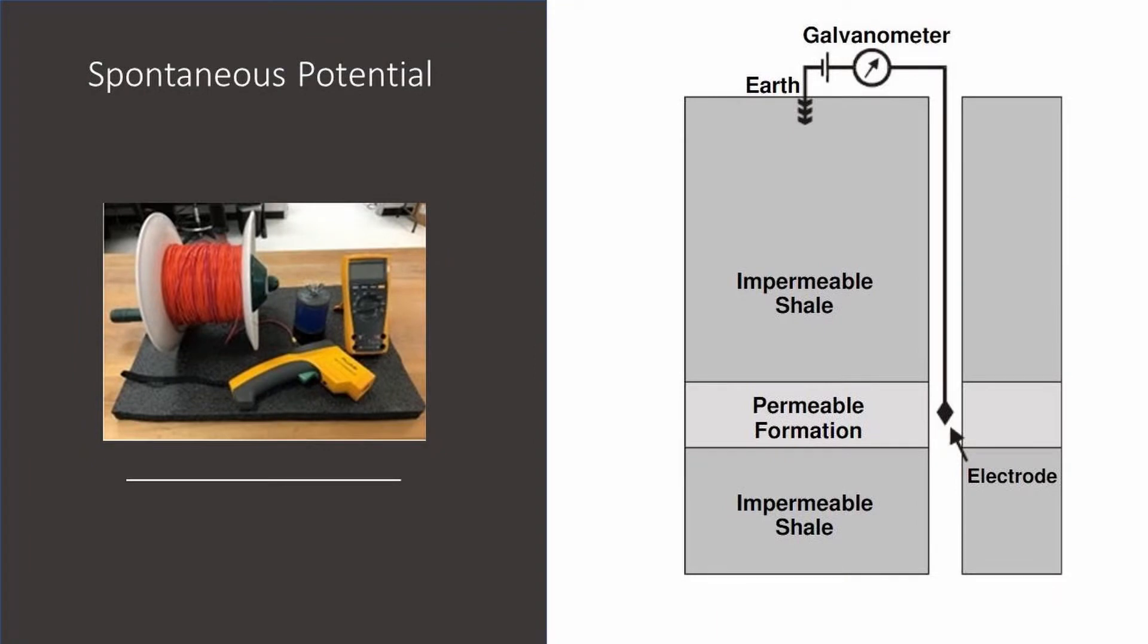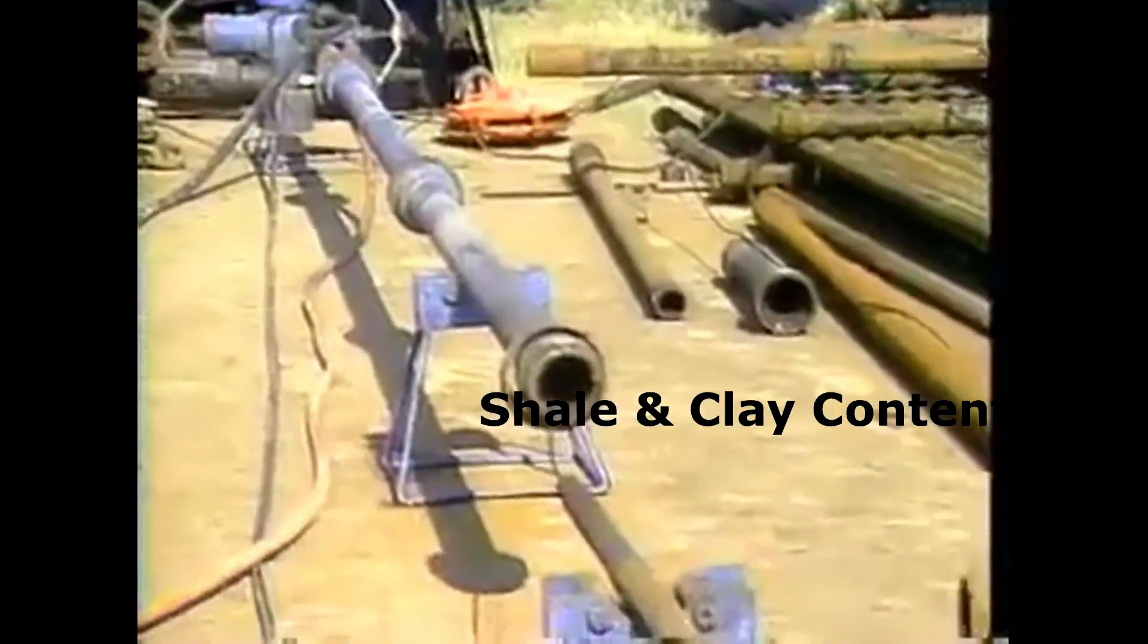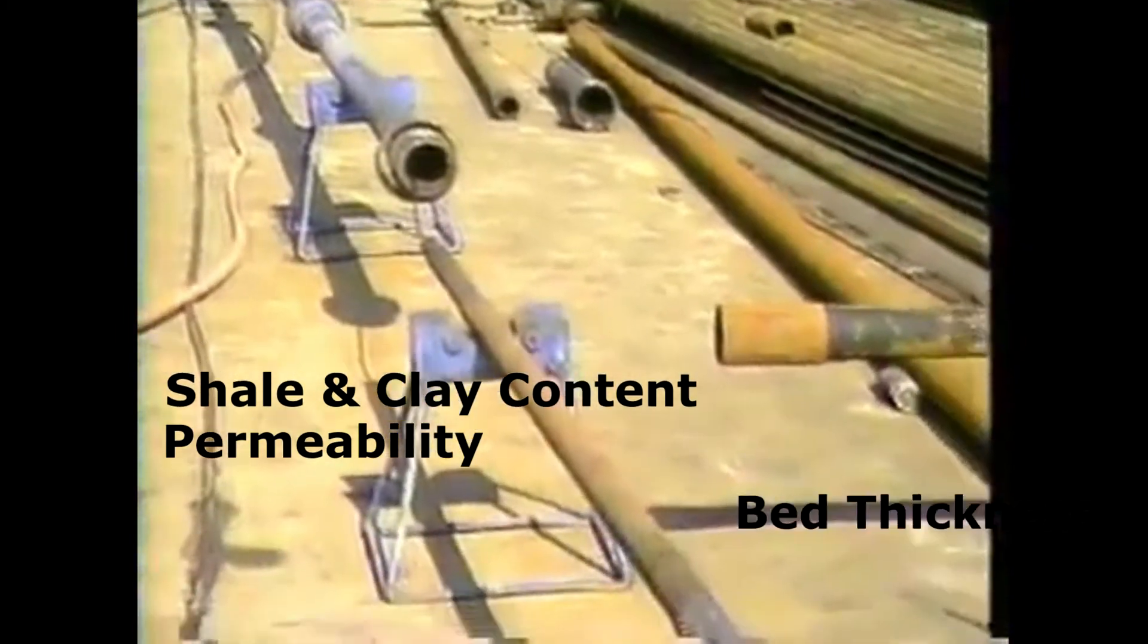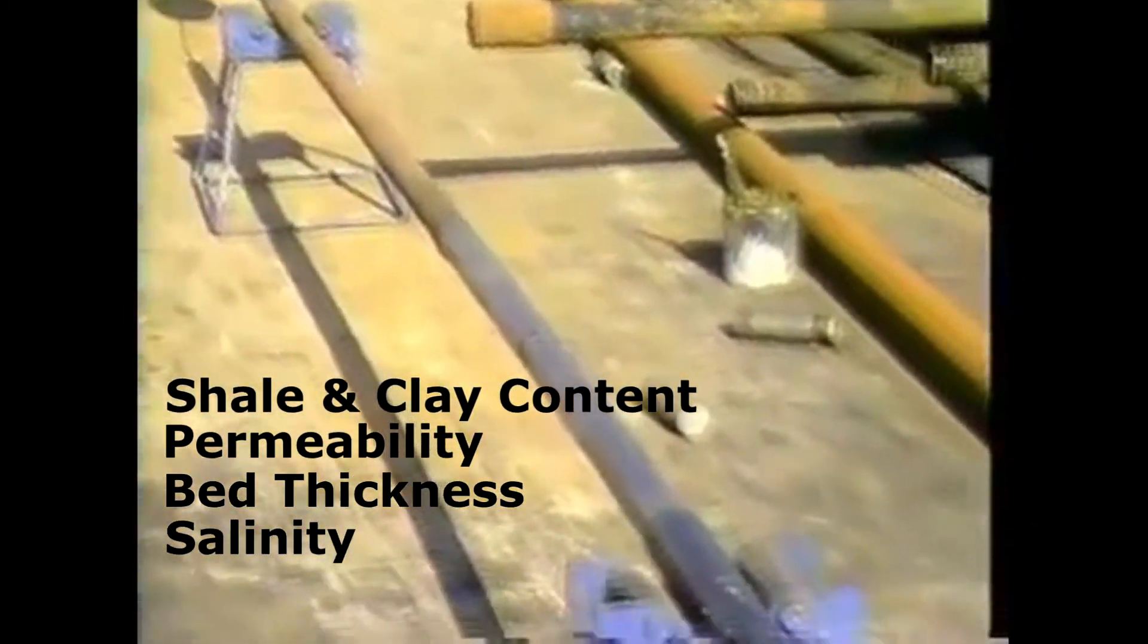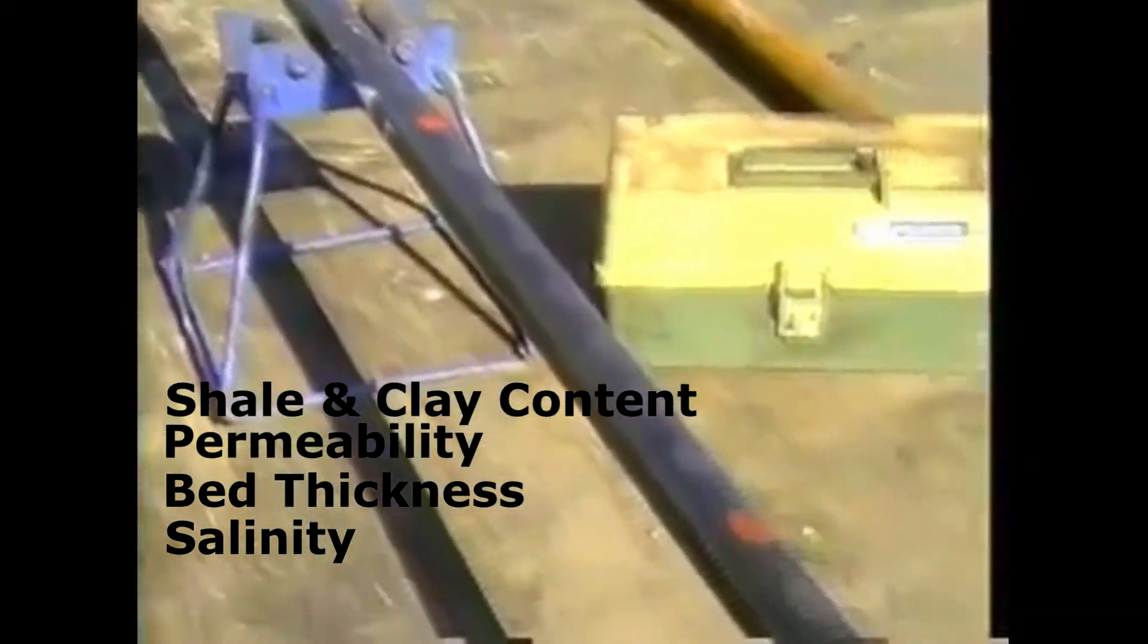A spontaneous potential sensor consists of a single electrode connected to a grounding point via a galvanometer. This measures the voltages at the contact points between sand aquifers and shale or clay beds. SP logs can be used to identify the shale and clay content, permeability, bed thickness, and salinity of the formation's water if certain conditions are met.